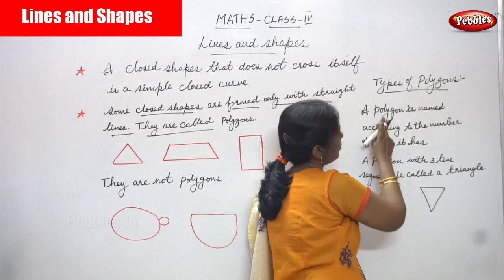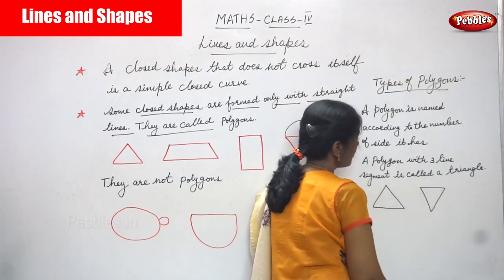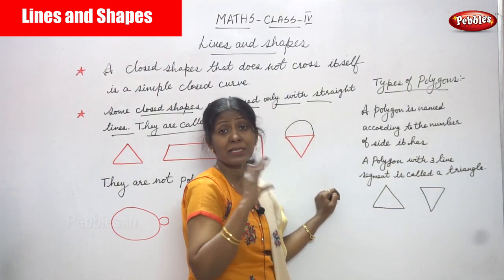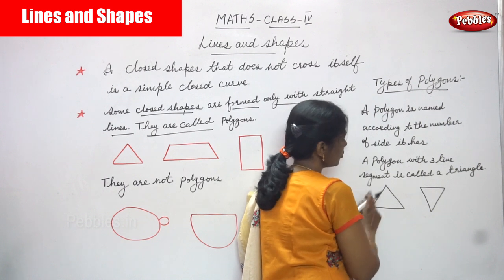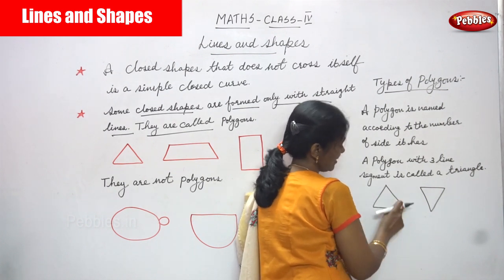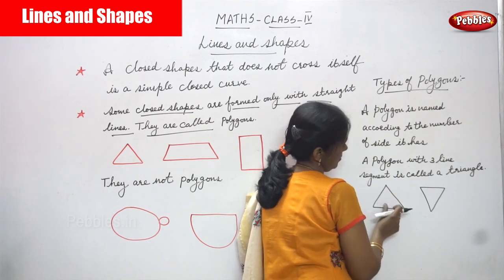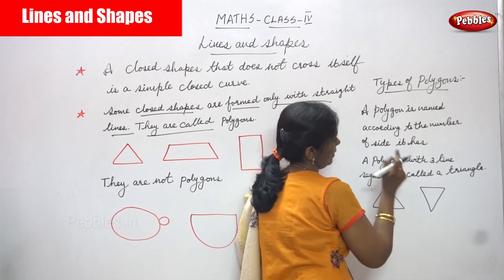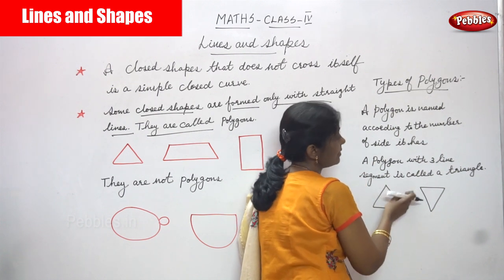Now we are going to see the types of polygon. A polygon is named according to the number of sides it has. A three-line-segment polygon is called a triangle — it is formed with three straight lines and has three sides. An upside-down triangle is also an example of a polygon. The first type is triangle.